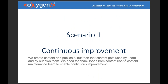The first scenario: as I attend different events, people talk a lot about enabling continuous improvement of technical documentation, because everything you make always has room for improvement. We create content, publish it, and then it's used by our users and our team. We need feedback loops — from how the content is used — back to the content maintenance team, to enable us to improve the content when it hits the real world.